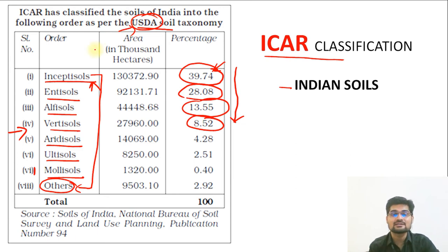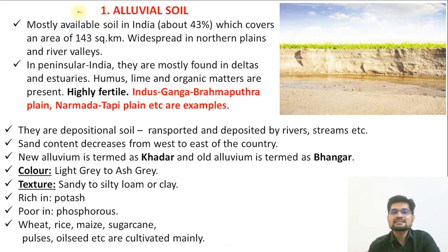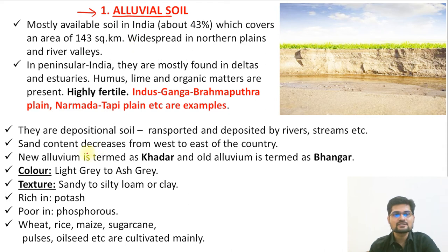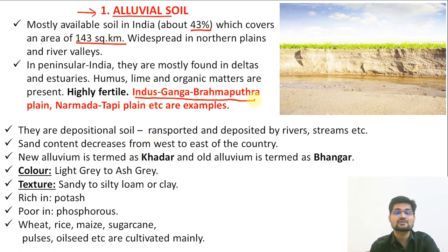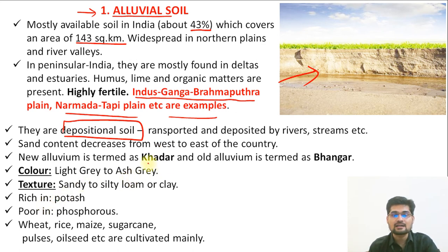Apart from the USDA-based classification, ICAR also classifies Indian soil into eight traditional categories. The first is alluvial soil, which constitutes about 43% of Indian soil spread over 143 square kilometers. These are largely the soils of river valleys — Indus, Ganga, Brahmaputra, Narmada, and Tapti plains — brought by river deposits. It is largely a depositional soil. Remember the terms Khadar — new alluvium — and Bangar — old alluvium.